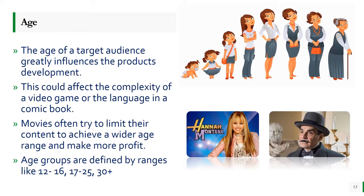The age of a target audience is going to massively influence the product. It could affect how complex to make a game or app, how difficult to make the language used in a comic book or story, and how much violence, sex, blood, or adult themes are included in a film or TV show. Age groups are usually defined in ranges — things like 12 to 16, 17 to 25, 30 plus, or under fives. As an example, Hannah Montana is aimed at around 10 to 13 year olds, whereas Poirot is aimed at over thirties, maybe even over forties.